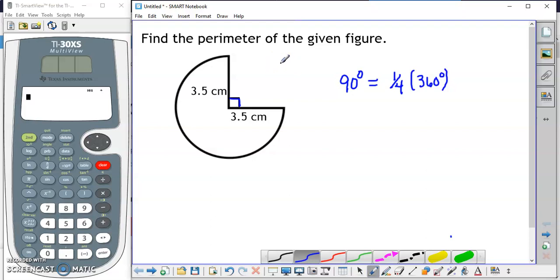So if we want to find the circumference of our figure, we need to find three-fourths of the circumference. That is going to be three-fourths times pi times d.